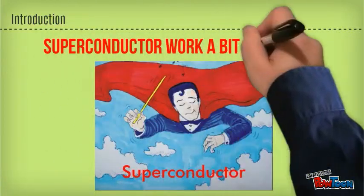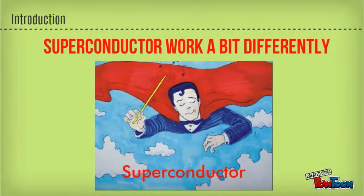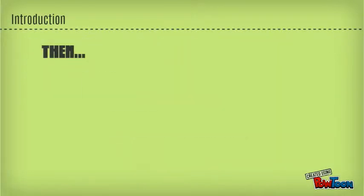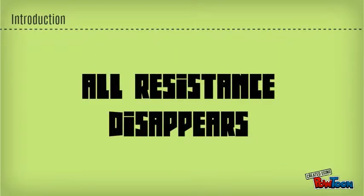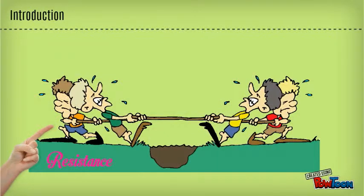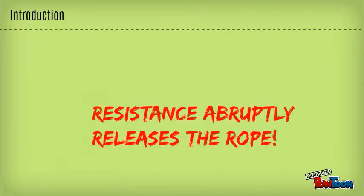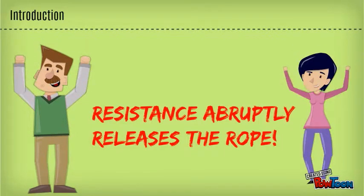Superconductors work a bit differently. As a superconductor cools, it follows a similar curve of gradually dropping resistance until it reaches its particular critical temperature. Then, abruptly, all resistance disappears. It's as if resistance were slowly losing a tug of war with conductance, and then, frustrated, lets go of the rope. We'll discuss this in more detail soon.